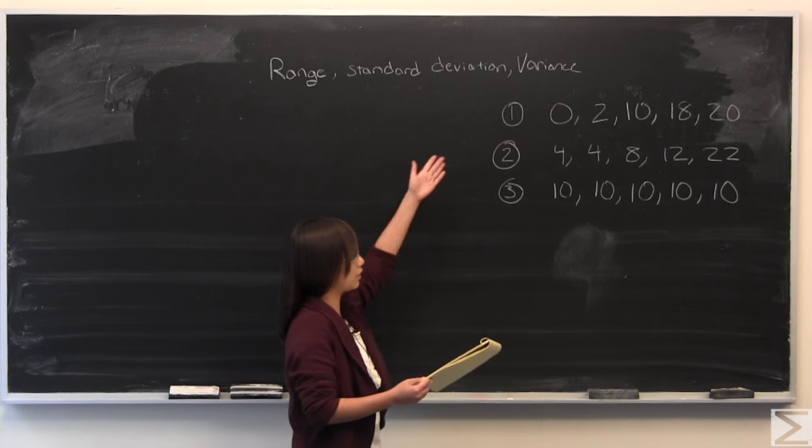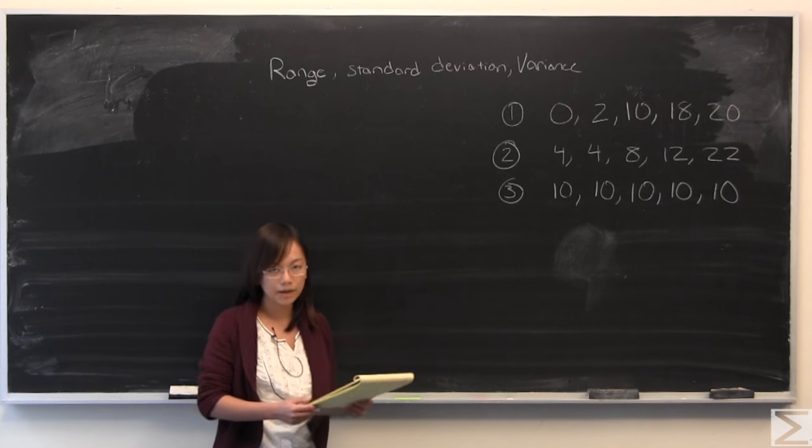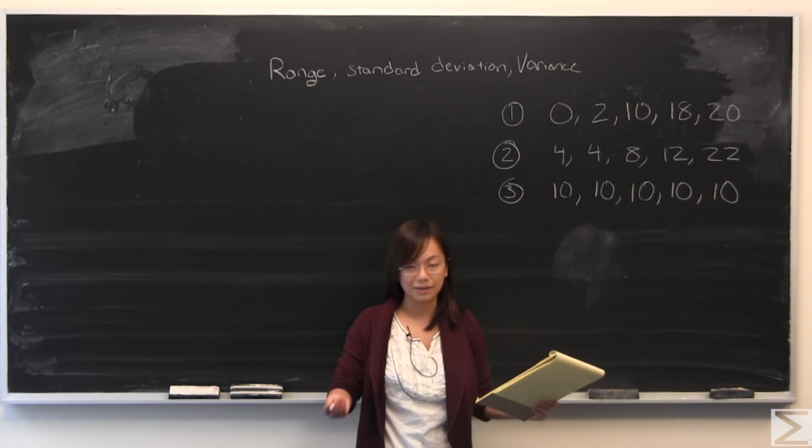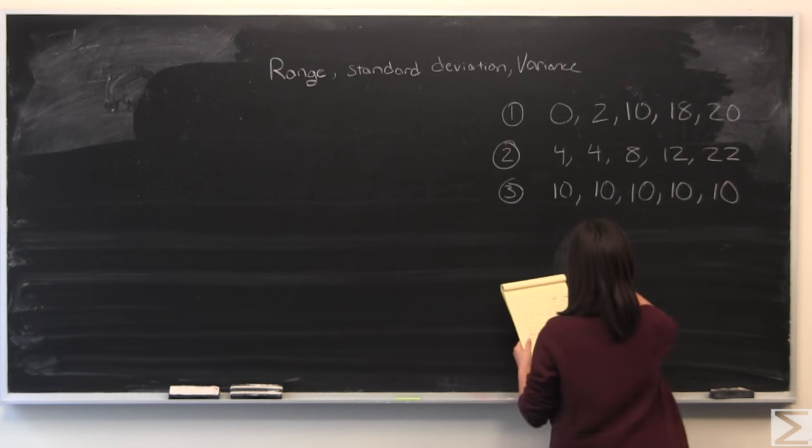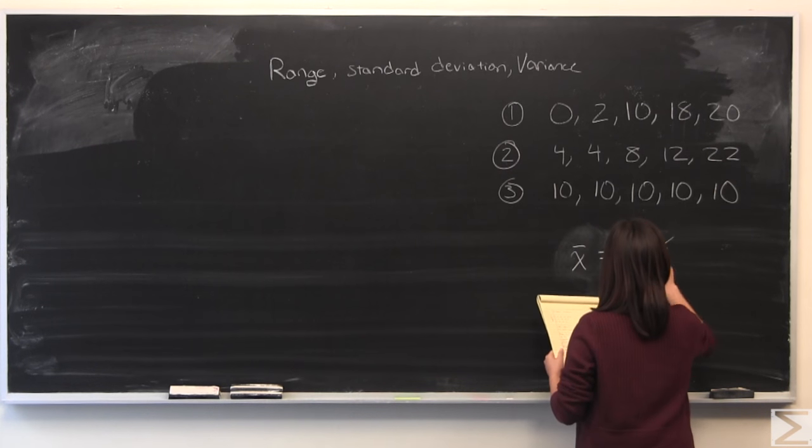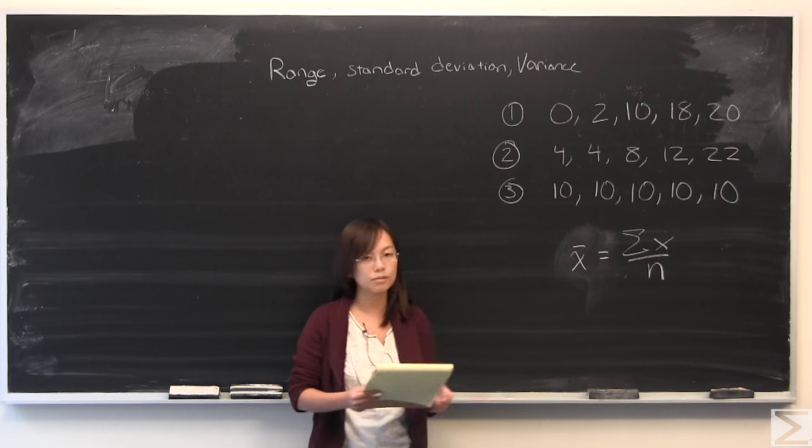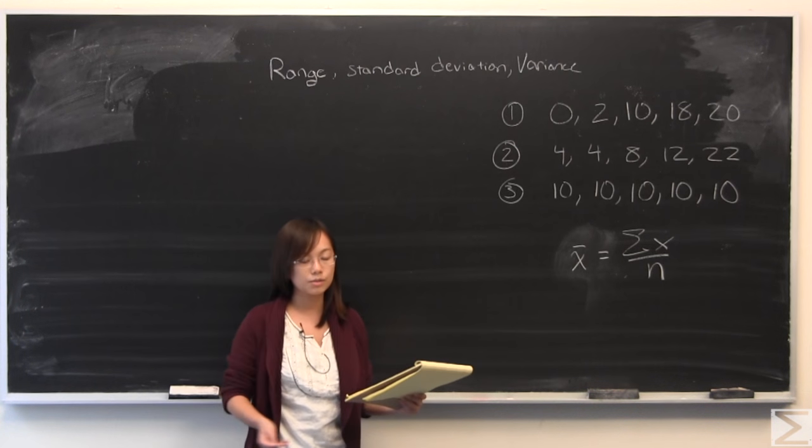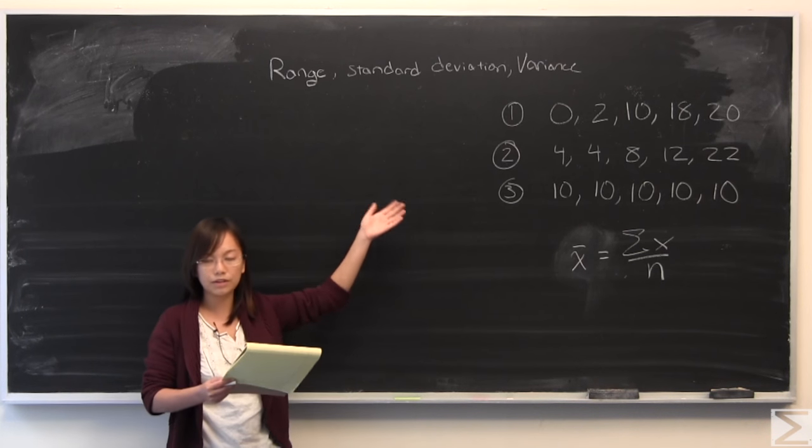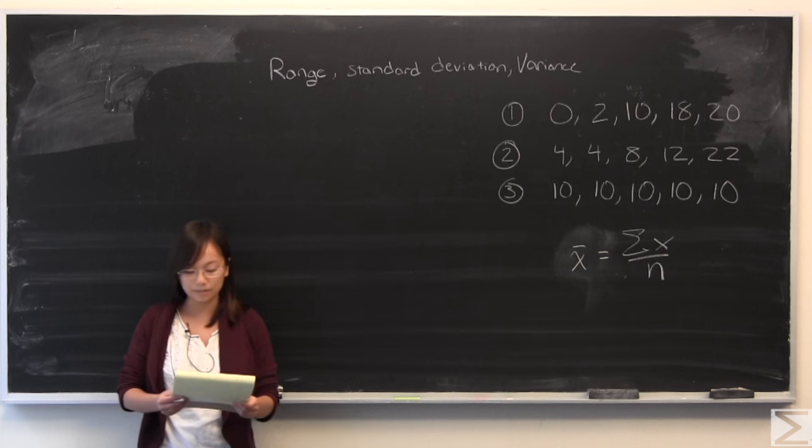I started by writing these three different sets on the board. As a friendly reminder, I will write down how you can calculate the mean, and then I will also calculate the mean for all three of these. You add up all the numbers and divide by the number of terms. If you calculate the mean for these three sets, you'll find that it's 10 for all of them.